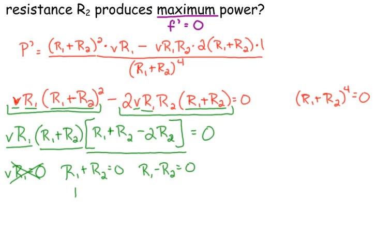The second expression, if we solve that by just moving one term to the other side, we get that R sub 1 is equal to negative R sub 2. Well, resistors can't have negative values. Resistors can't have negative values, so that answer doesn't make any sense.